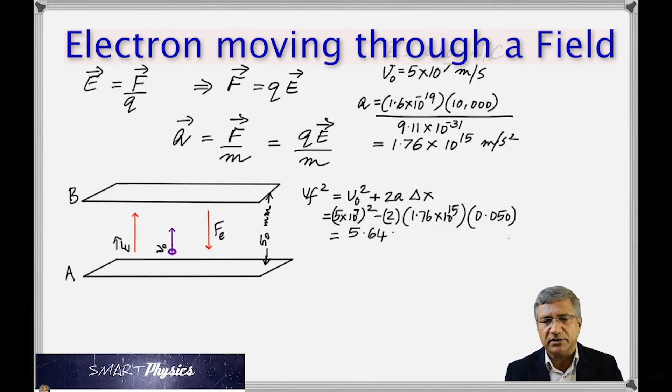So when you do the calculations, you get VF squared as 5.64 times 10 to the 14. When you take the square root, of course now it's positive, so you get a square root, you're going to get 2.37 times 10 to the 7 meter per second.